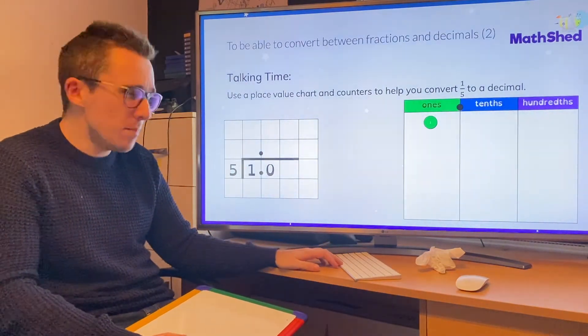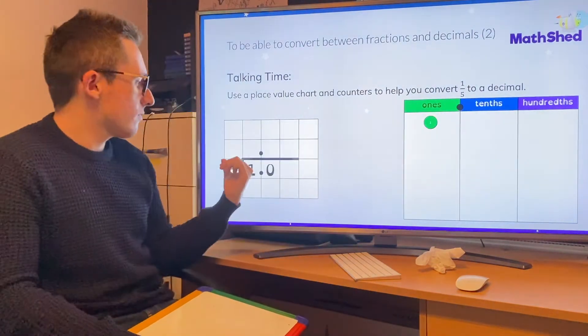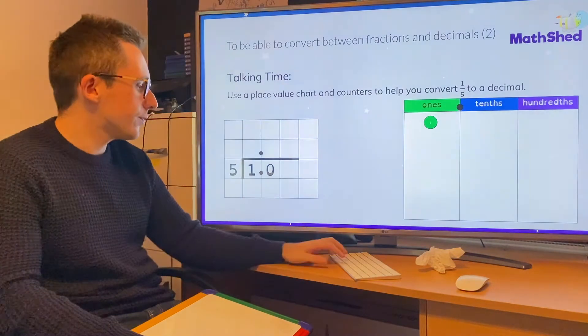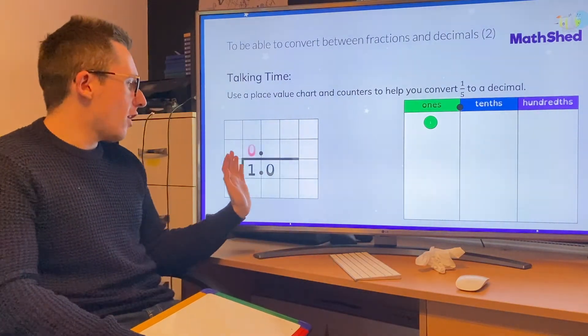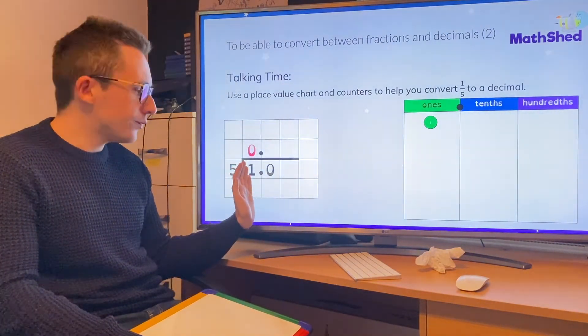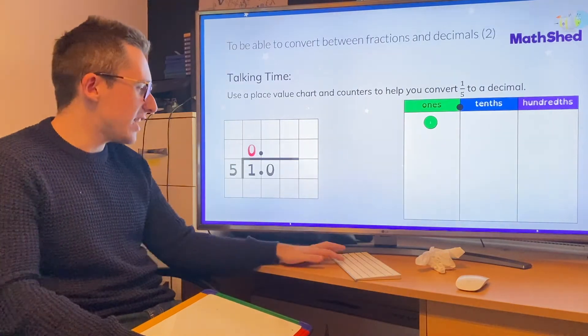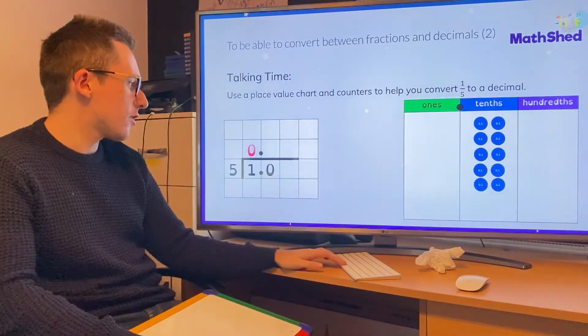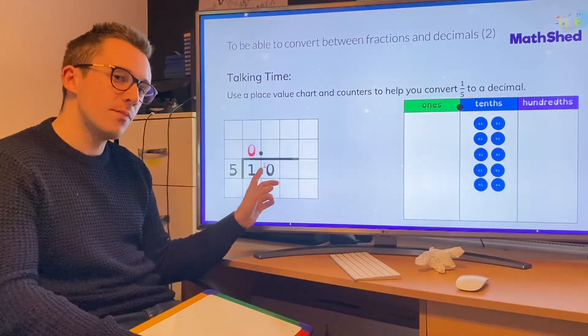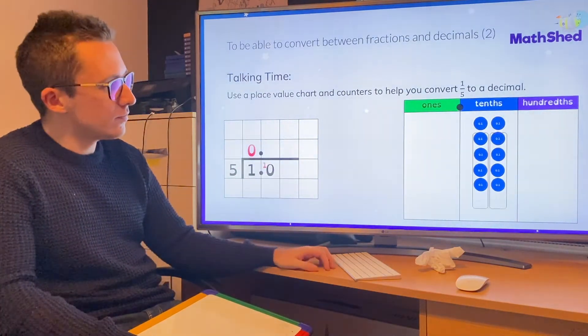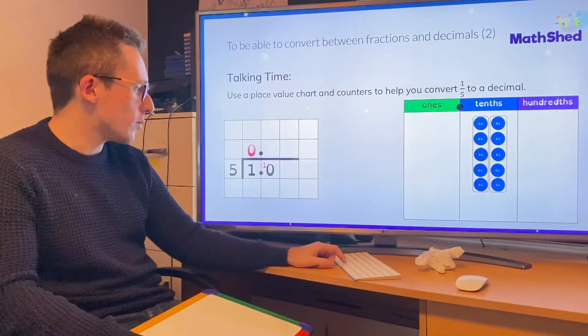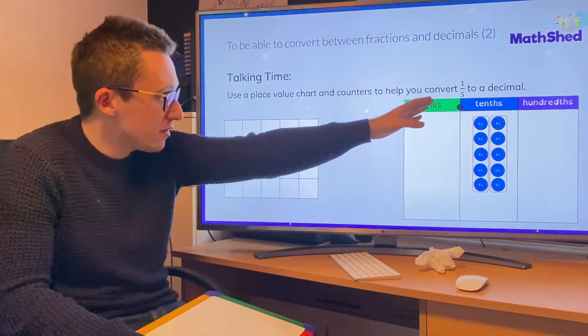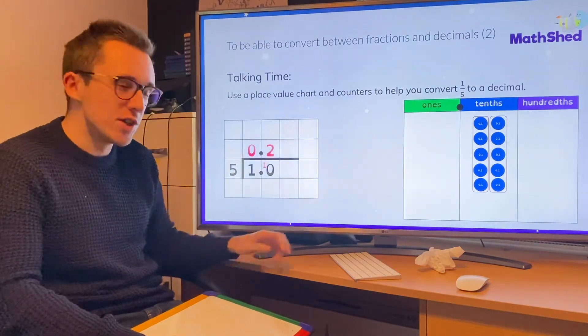I'll show you with this one. Again, denominator on the outside, numerator on the inside. Five doesn't go into one, so we put a zero, and we carry the one over. We turn it into tenths, which we show here. Five goes into ten twice, two groups. So the answer is 0.2. One fifth is equal to 0.2.